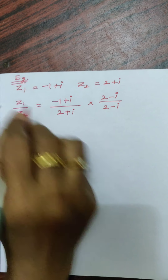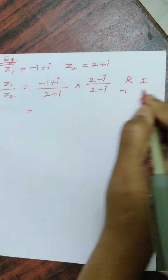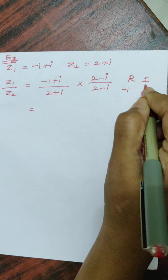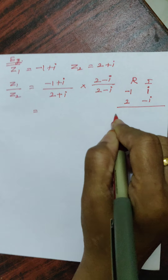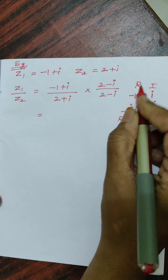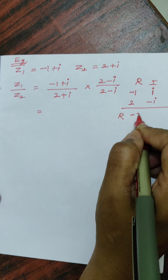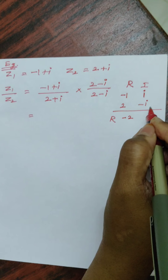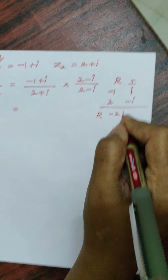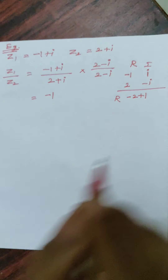z1 by z2 is (minus 1 plus i) by (2 plus i). The conjugate of 2 plus i is 2 minus i, so multiply by (2 minus i) over (2 minus i). For the real part: real times real is 2 times minus 1 equals minus 2. Imaginary times imaginary: i times i is i squared equals minus 1, and with the minus already present, it becomes plus 1. So minus 2 plus 1 gives minus 1.